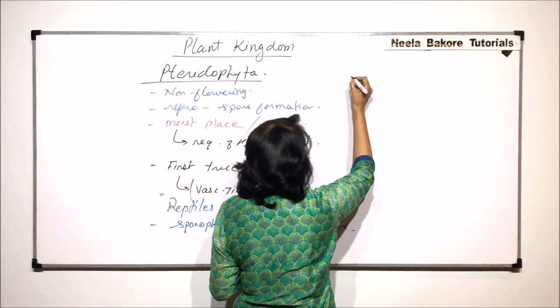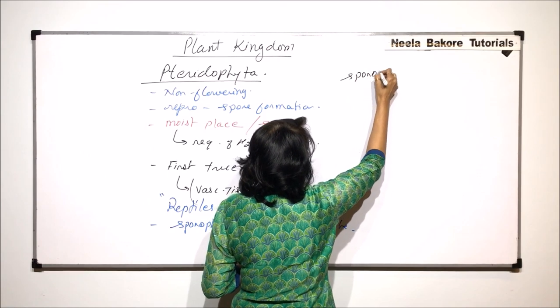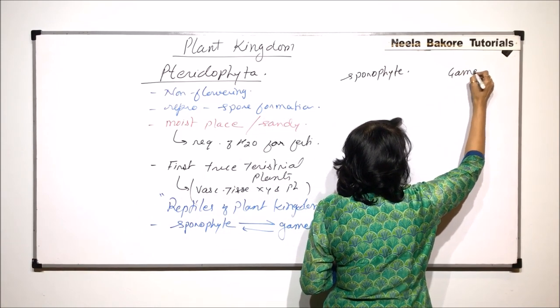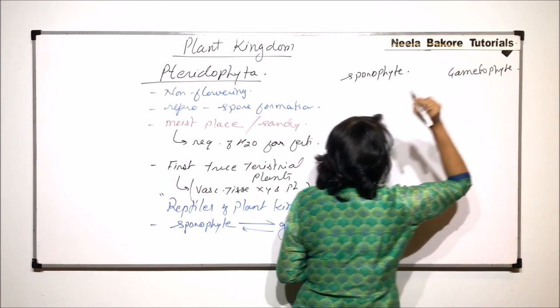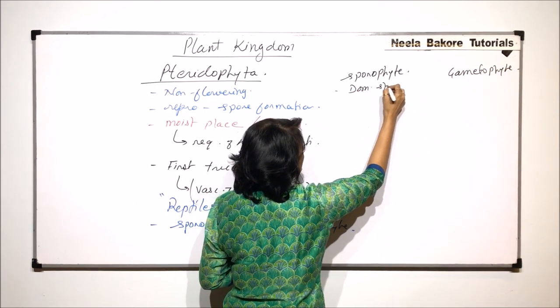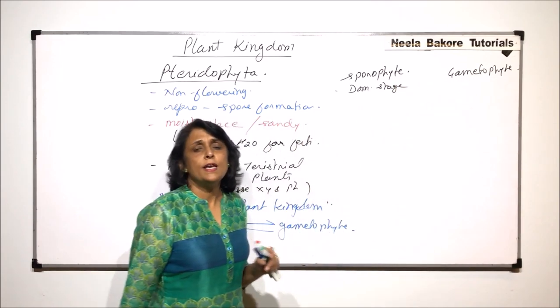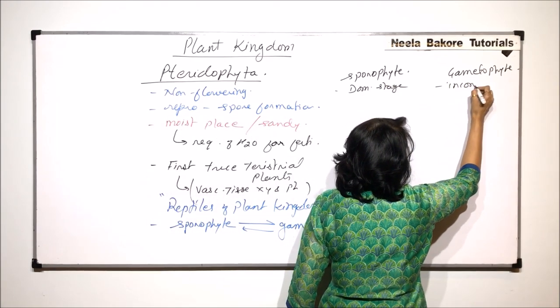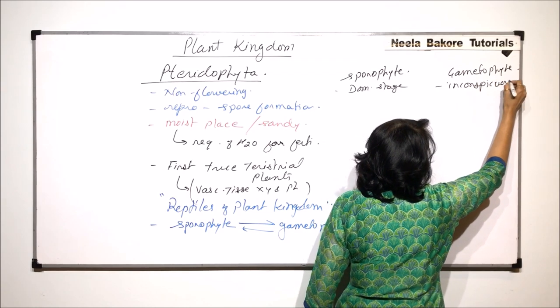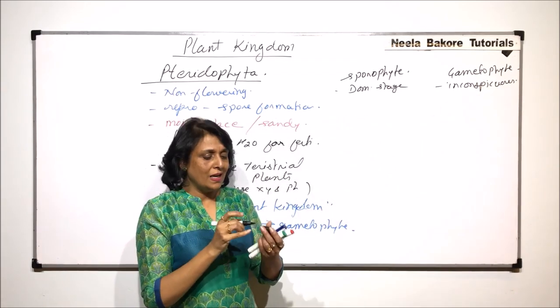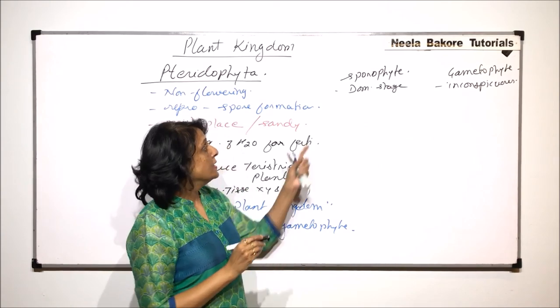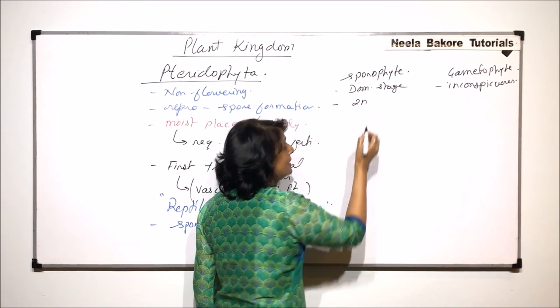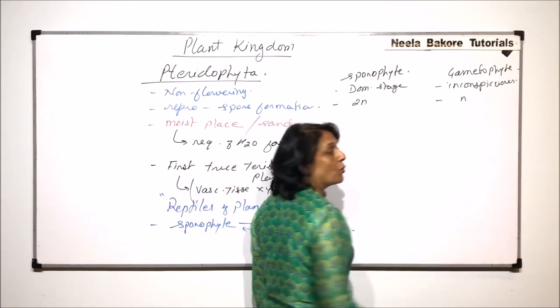Now let us talk about these two stages, the sporophyte and the gametophyte. The sporophyte is the dominant stage, and this is a very primitive, short-lived stage, not very conspicuous, so this is inconspicuous, not clearly visible. It is a small green thallus-like body which we call the prothallus. The sporophyte is the spore producing and it is the diploid part. The gametophyte is the haploid stage.